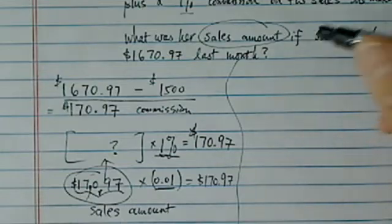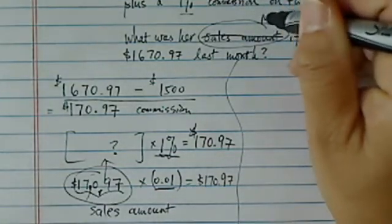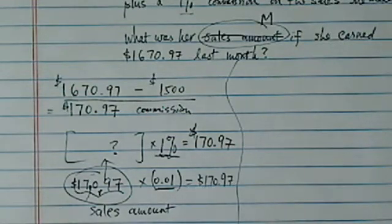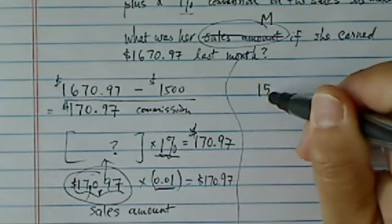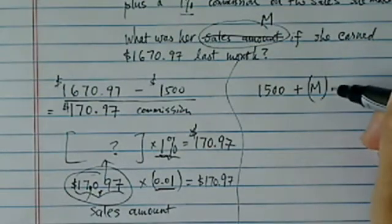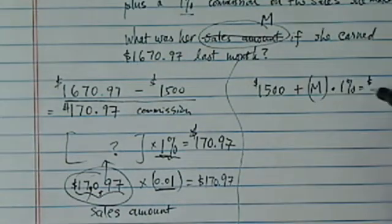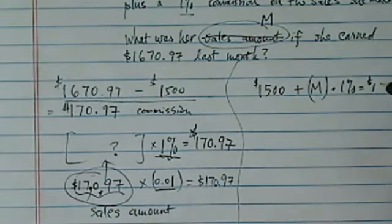She sold $17,097. That's how we solve this problem if we're using pre-algebra. Now using the algebra part is a lot easier. We're going to call the sales amount M. We don't know what M is, but we don't care. So we're going to write the equation out. She has a base salary and whatever she sold times 1% is equal to what she made, which is $1,670.97.